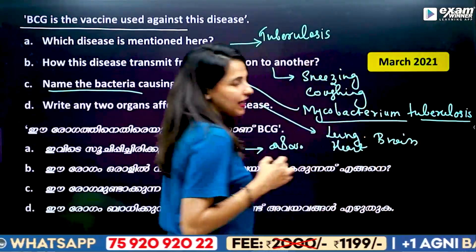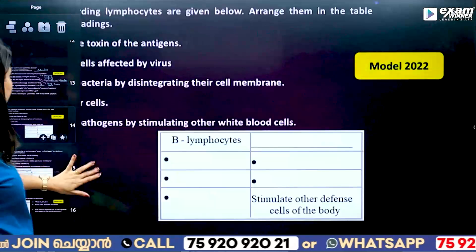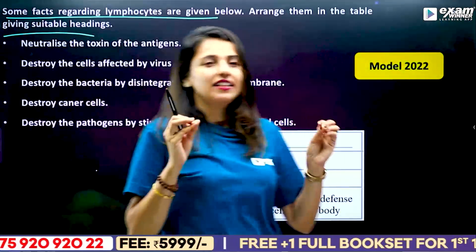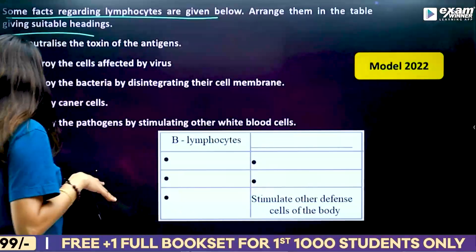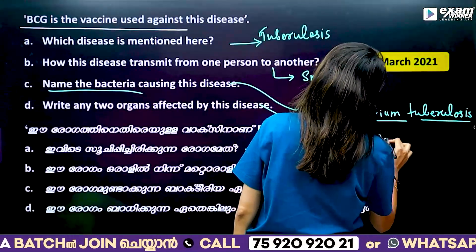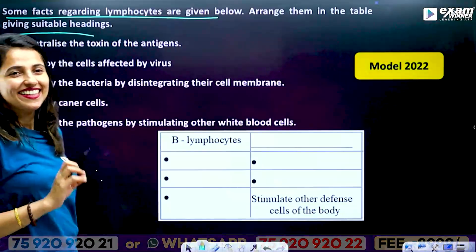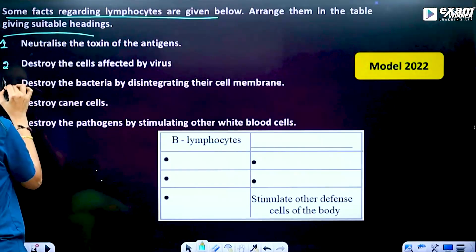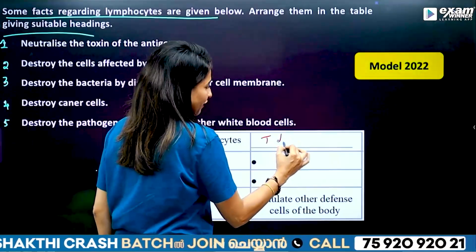Any two organs affected by this disease: the lungs, heart, and brain are affected. The next question: some facts regarding lymphocytes are given below — arrange them in the table giving suitable headings. We are looking at B lymphocyte and T lymphocyte.